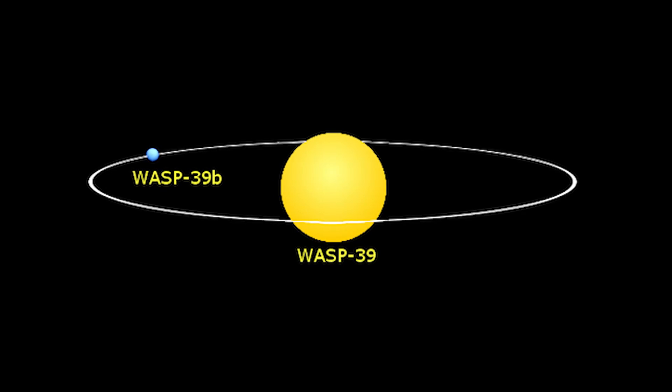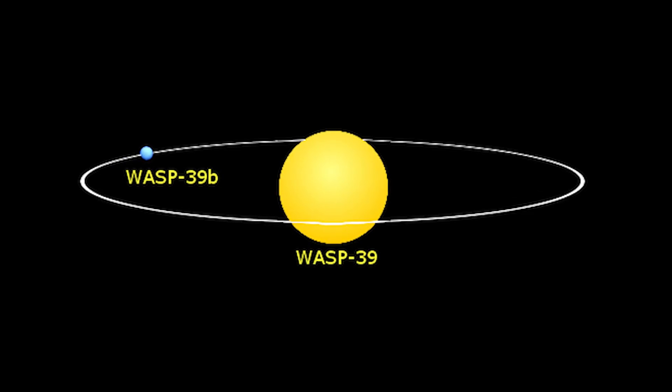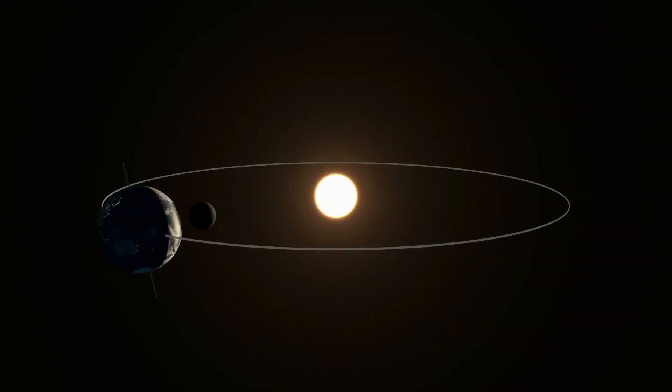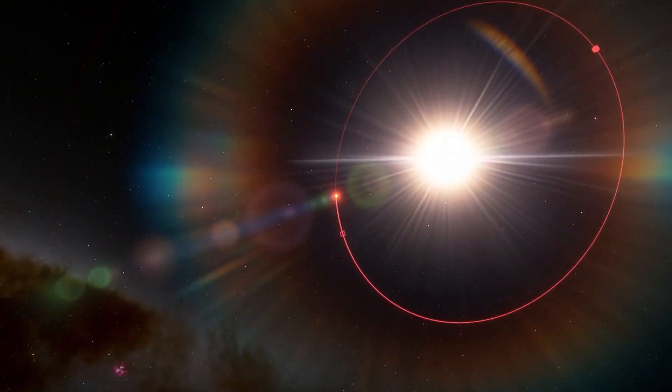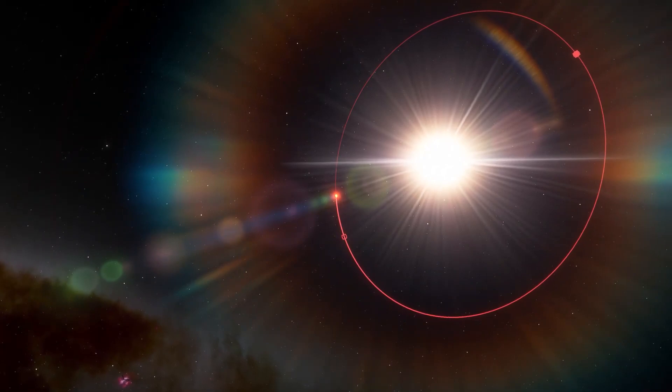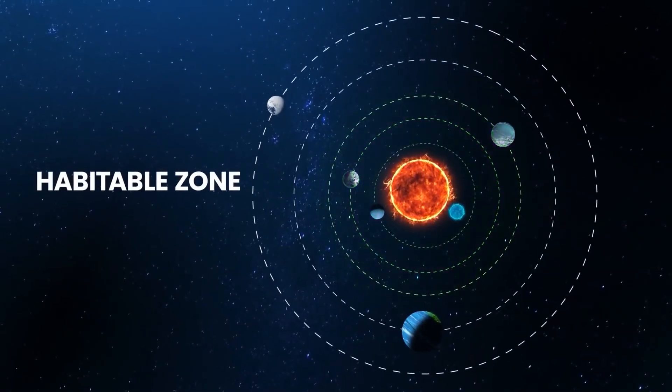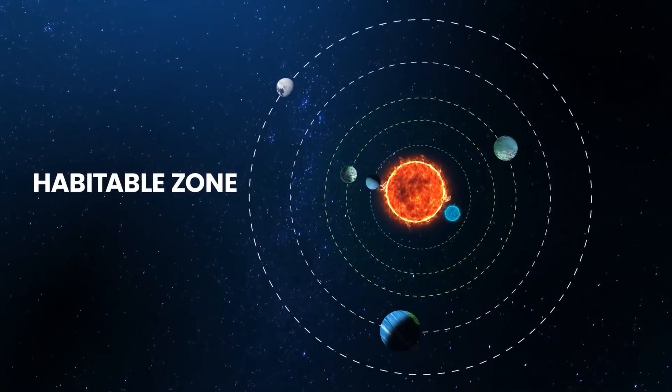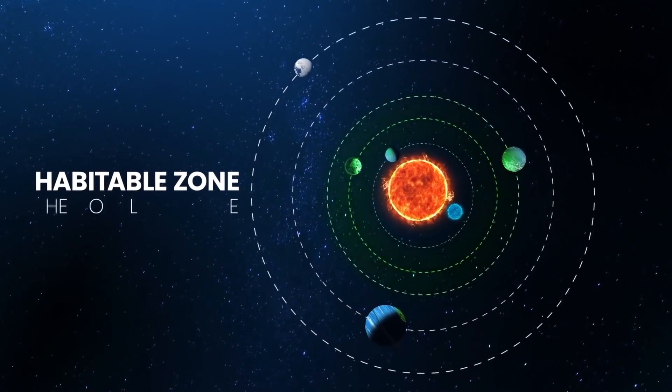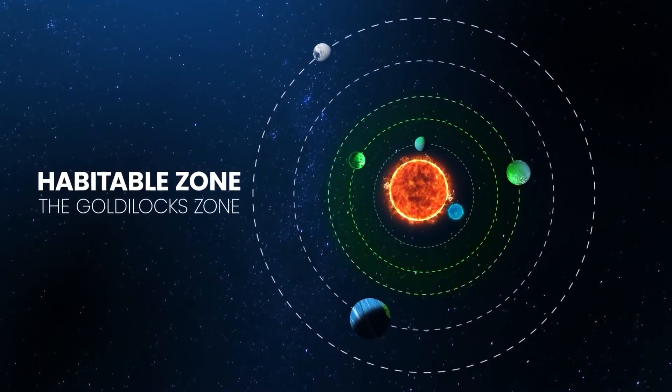WASP-39b orbits extremely close to its parent star, WASP-39, at less than one-twentieth the distance between Earth and the Sun, completing one orbit about every four Earth days. It resides in the Goldilocks region of that solar system, which means that it isn't too close to get burnt by its sun and not too far that it freezes over.